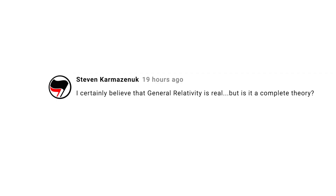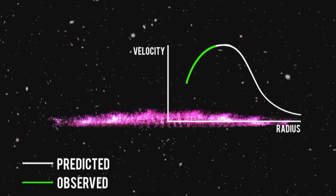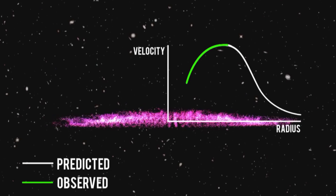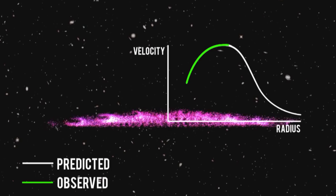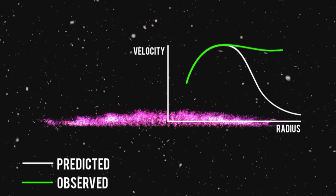Stephen Karmazenek agrees that general relativity is real, but asks if it is a complete theory. The answer is quite clearly no. In this episode and the previous one, I've pointed out that while relativity works spectacularly well in the cosmic sphere, it fails miserably in the quantum one. In addition, even in the cosmic sphere there are questions — for instance, galaxies rotate faster than we can explain using the observed amounts of matter in the theory of general relativity. Physicists believe that the explanation is a substance called dark matter, but we haven't directly observed dark matter. One possible explanation is that general relativity needs to be modified or replaced. I'll talk about the whole dark matter thing in an upcoming episode.